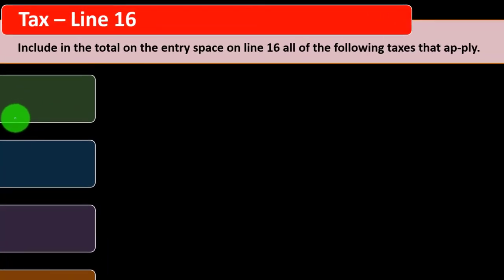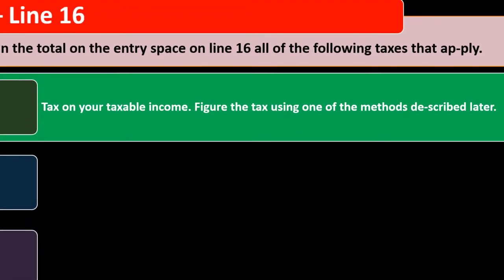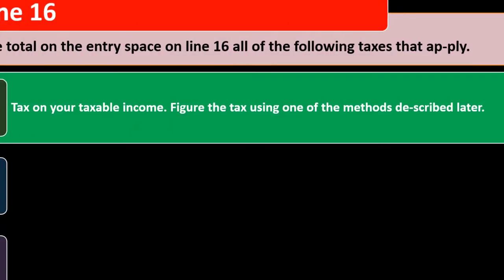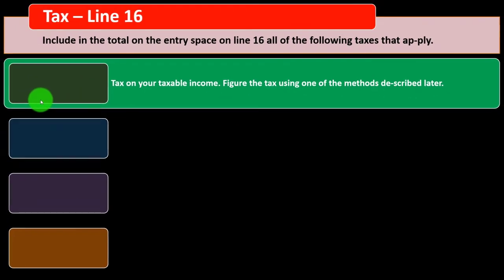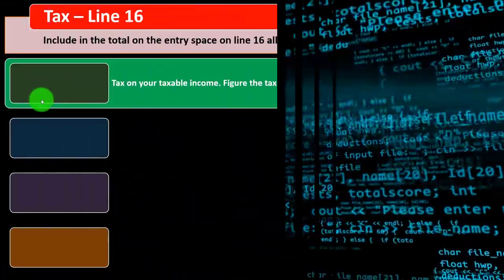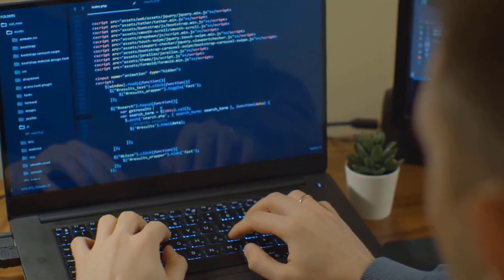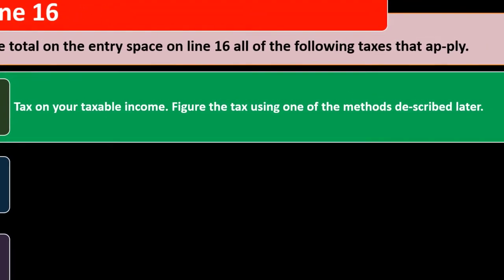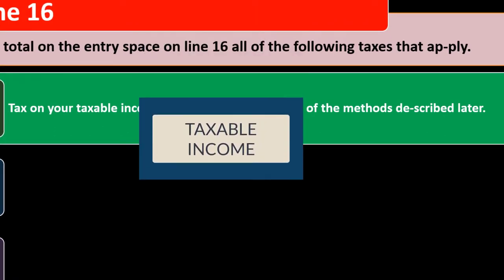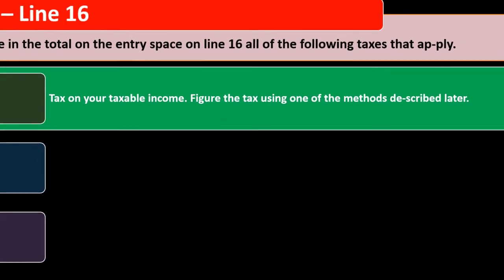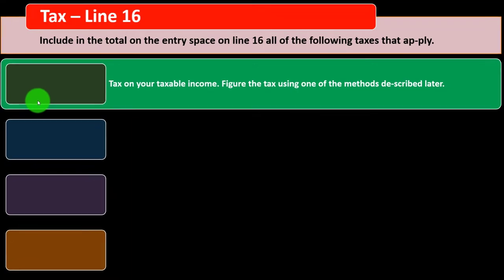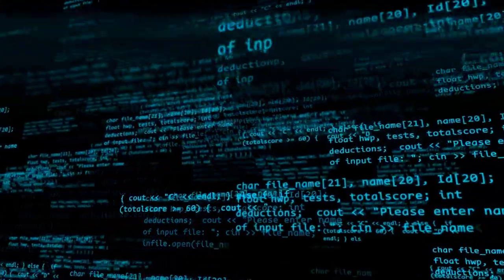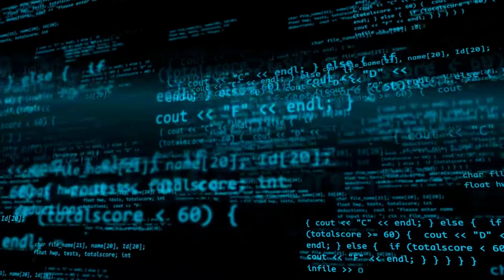Include in the total on the entry space on line 16 all of the following taxes that apply, including tax on your taxable income — your federal income tax being calculated here. Figuring the tax can be complex. We often rely on software because we have a progressive tax system where the same income is taxed at different rates, and some components like capital gains or qualified dividends are taxed using different schedules.